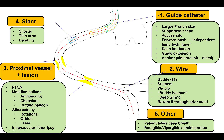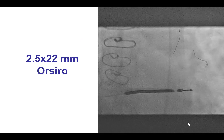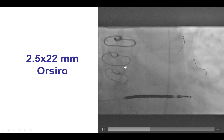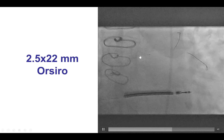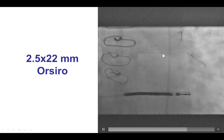Delivering the stent into the diagonal was very challenging despite predilatation, so we did additional vessel preparation. What to do if there is difficulty delivering a stent? Options include using a larger guide, a different guide wire such as a buddy wire or wiggle wire, better lesion preparation with balloons or atherectomy, a more deliverable stent, or other techniques like deep breathing or lubricious solutions. In this case, after predilatation, we used an Orsero stent — which is very deliverable due to its thin strut size — and this was successfully delivered into the diagonal branch.